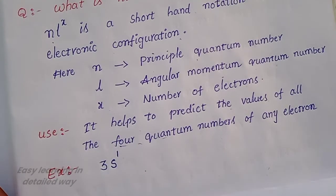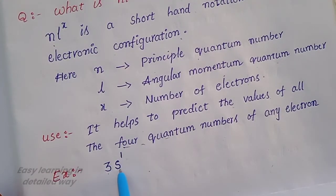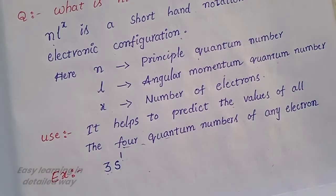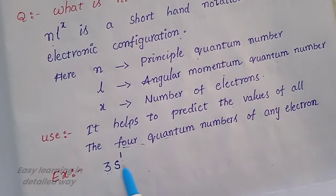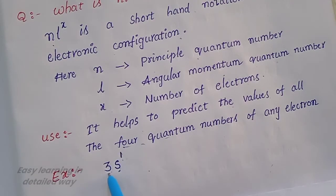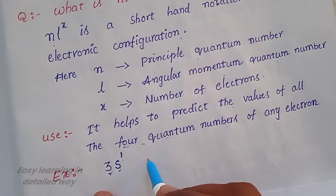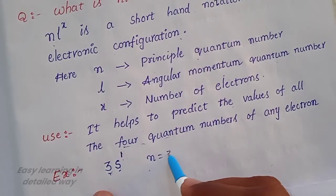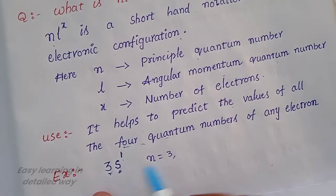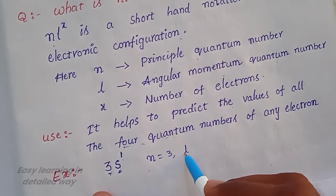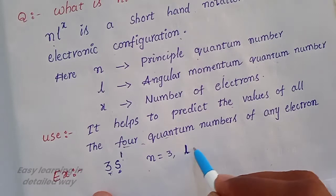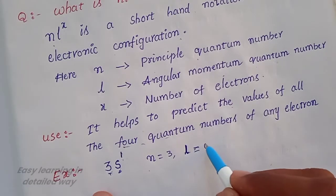For example, take 3s1. It belongs to the S subshell and the third orbit — that is the M shell. Here N equals 3. For the S subshell, L is the angular momentum quantum number, and the L value is 0.